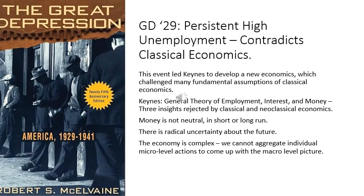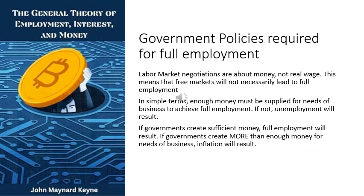The Great Depression proved that this theory was wrong, because there was high unemployment which persisted for a long time and was not eliminated by the workings of the free market. And that is why Keynes set out in his General Theory to explain why this could happen. One of the axioms of classical economics he rejected was the neutrality of money. He argued that money must be present in sufficient quantities for the needs of business; otherwise unemployment will result.